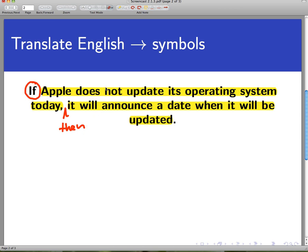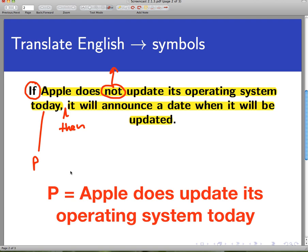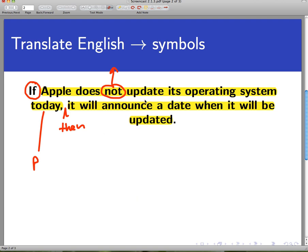Let's pick this apart and symbolize the individual statements. First, the hypothesis. Notice there's a not in here. Just like in the previous screencast, let's pull that not out and go with the simplest possible statement. Let's let P be Apple does update its operating system today. So the entire hypothesis of this conditional statement is going to be not P.